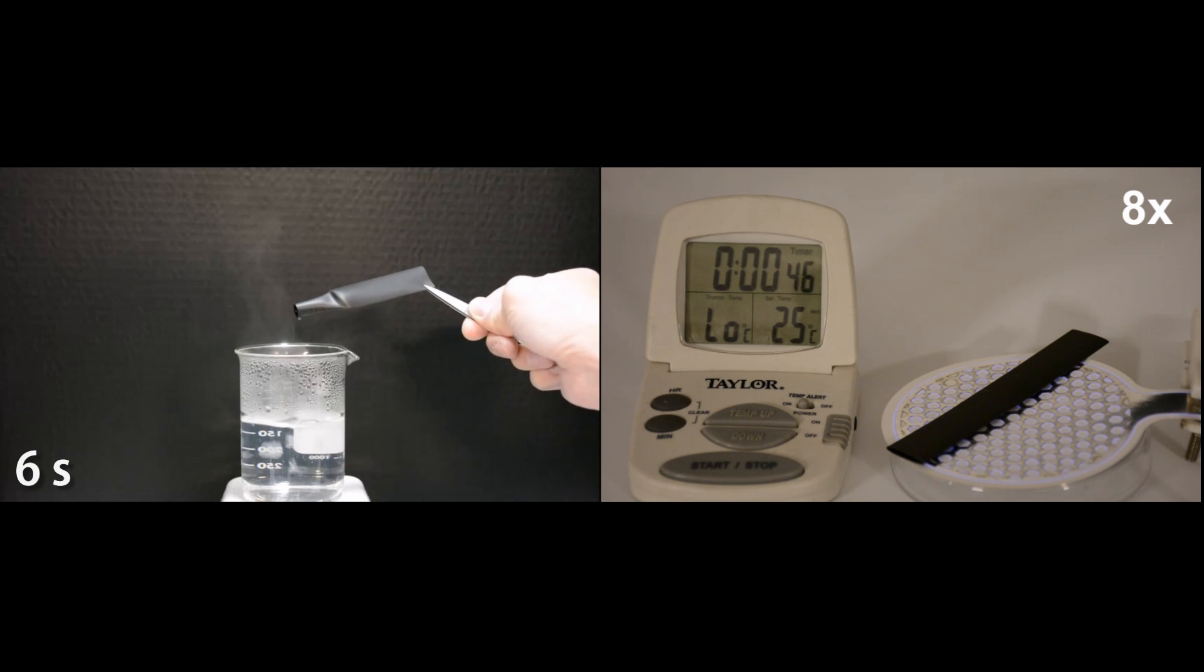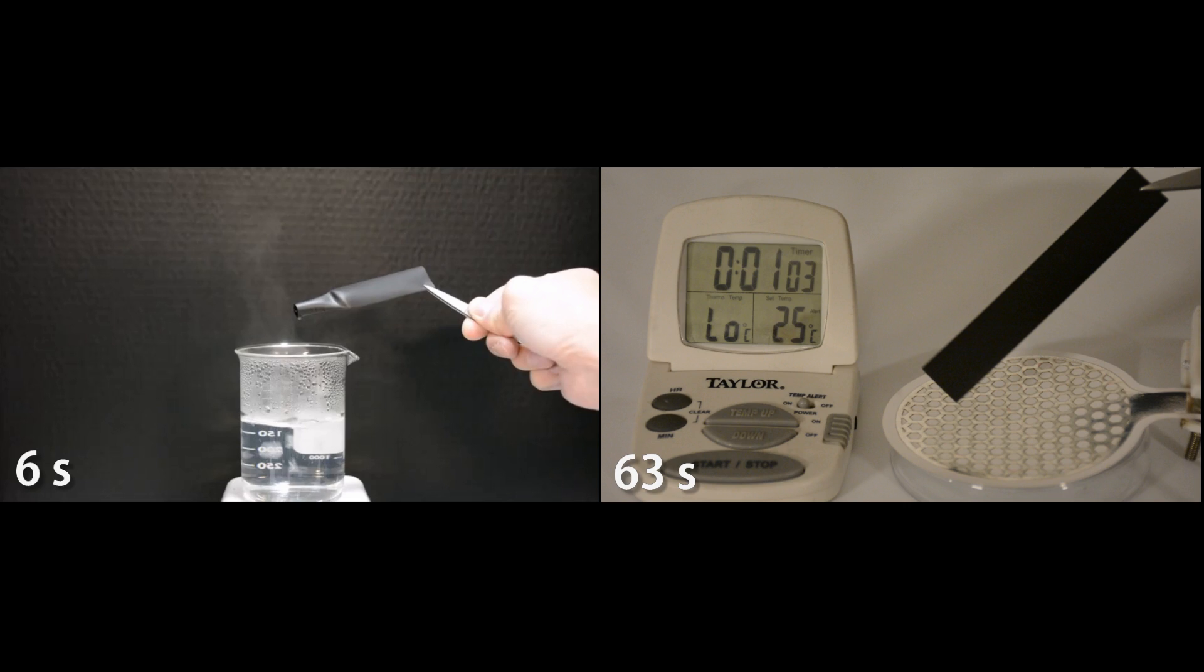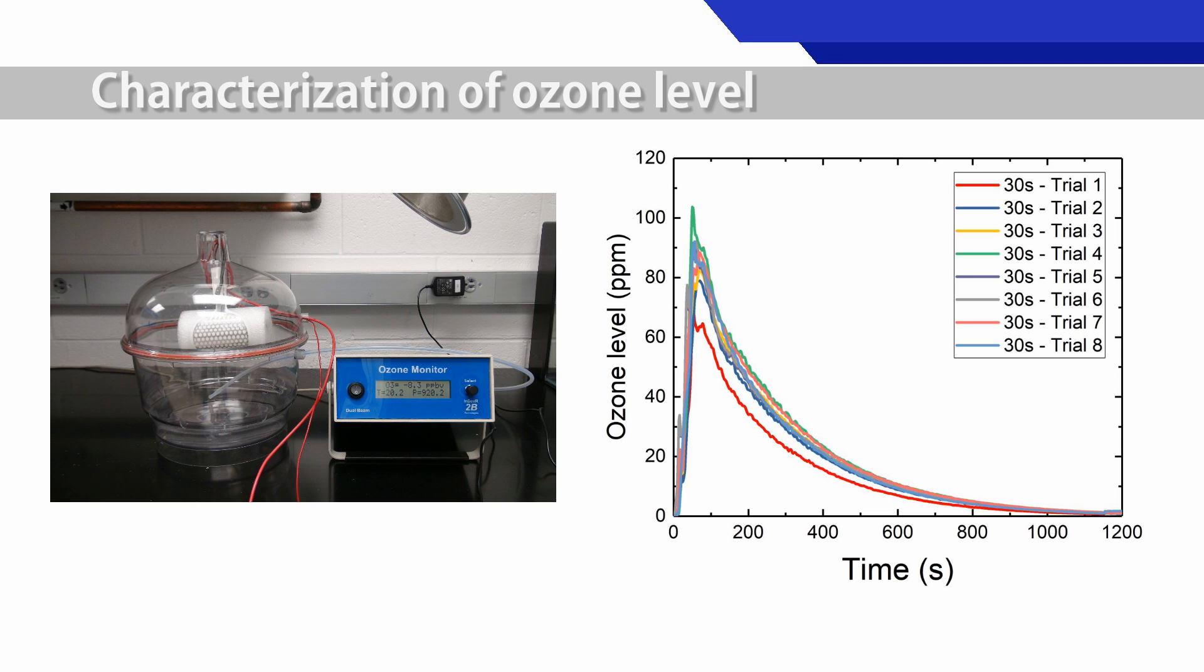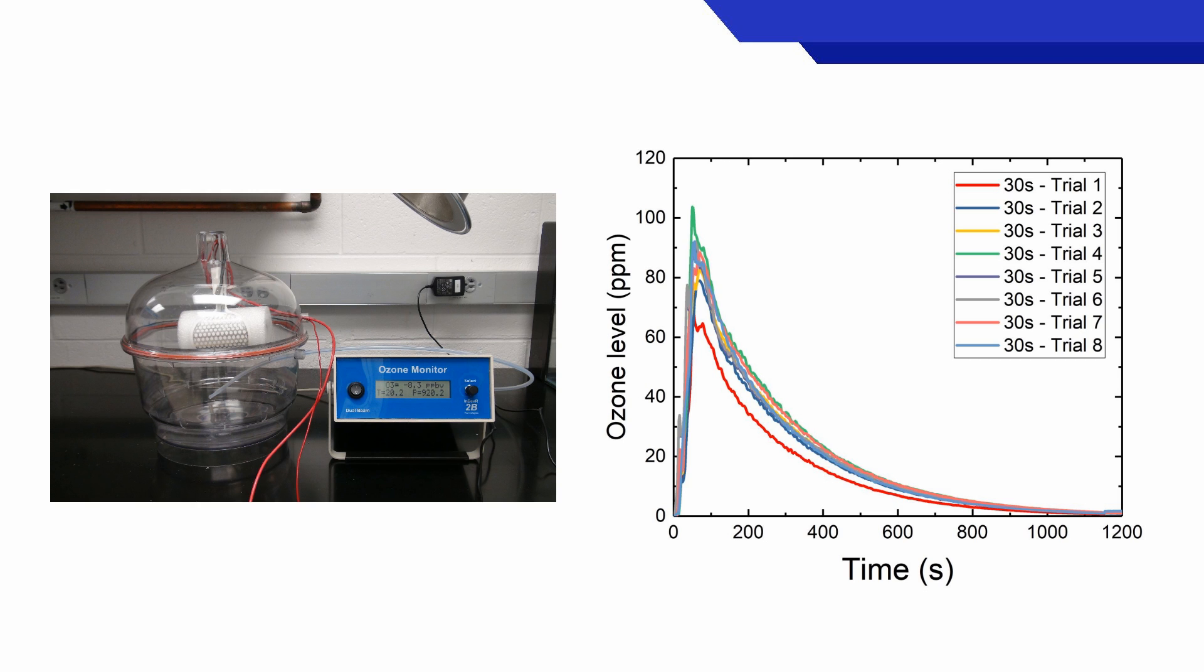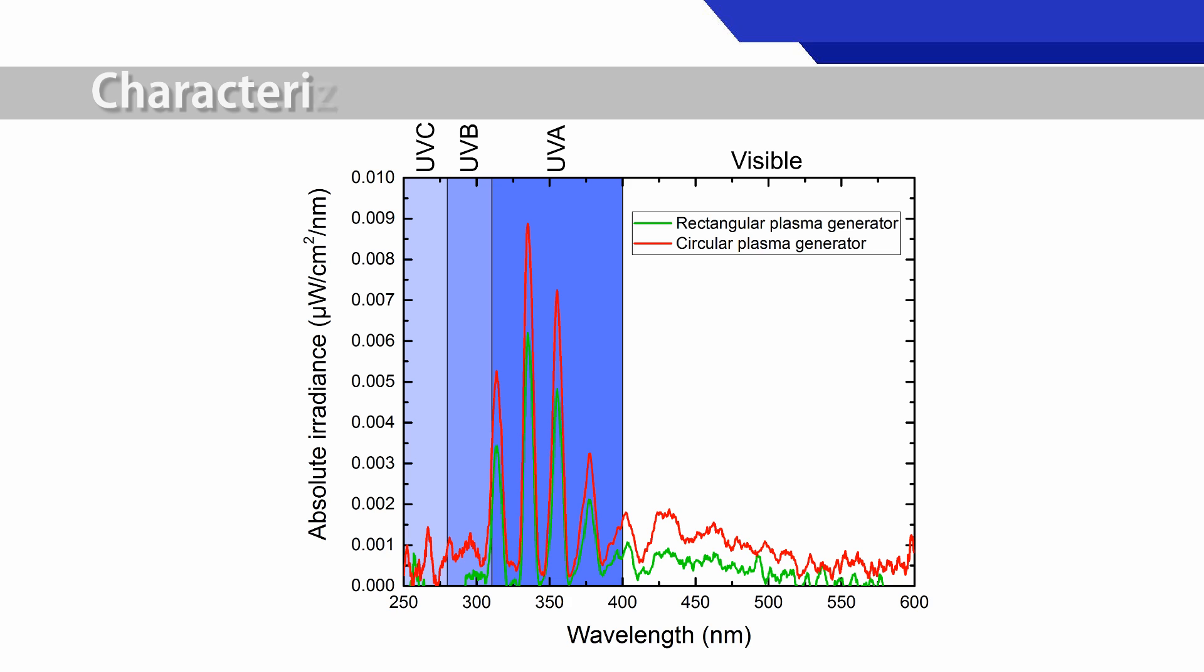Characterization of plasma generated from the sanitizers revealed a detectable level of UVC, a high level of ozone, and modest surface temperature, about 60 degrees Celsius for 60 seconds of activation.